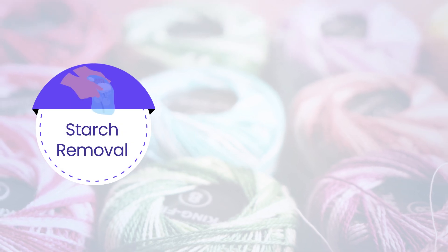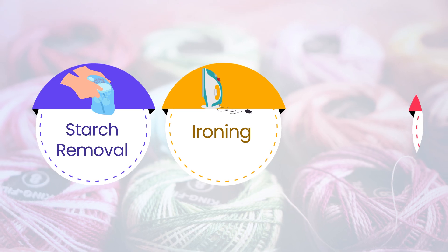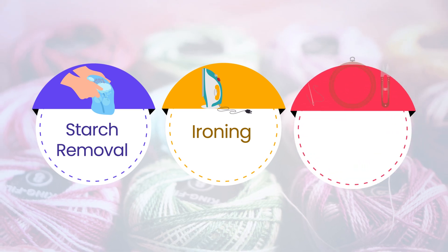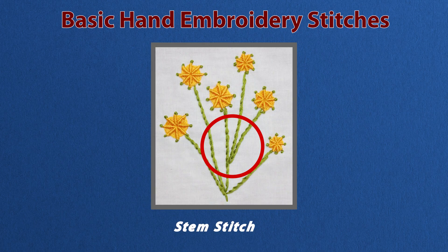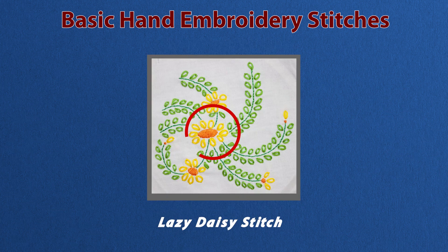Before starting the embroidery work, some preparations are needed, like starch removal from the fabric to be embroidered, ironing the fabric, and arranging the appropriate thread, frame, needle and various other materials. The basic hand embroidery stitches include running stitch, stem stitch, satin stitch, long and short stitch, chain stitch, lazy daisy stitch and various other stitches.